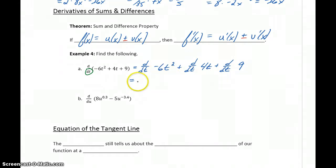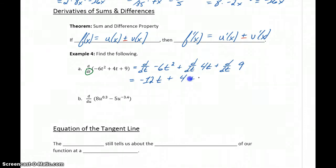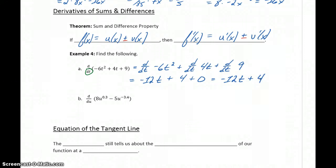So the 2 will come down as our product in front, making this negative 12t to the first, or just t. The derivative of 4t will become 4, and the derivative of 9 will become 0. So we get negative 12t plus 4. Really, we're just applying the properties that we already established above, but now just breaking that up over multiple functions being added or subtracted from each other.